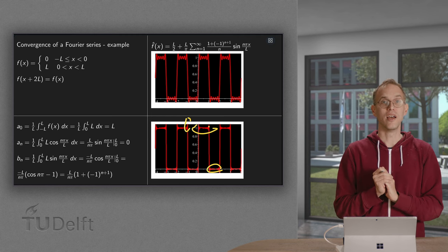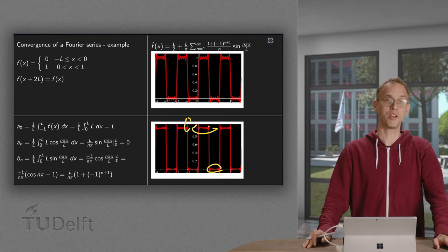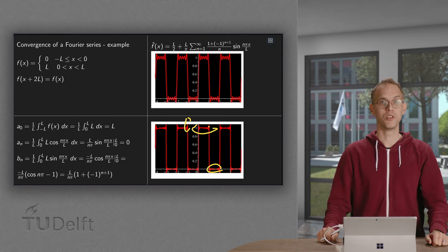But apart from that, your Fourier series really approximates nice to your original function, even if you have some jump discontinuity.